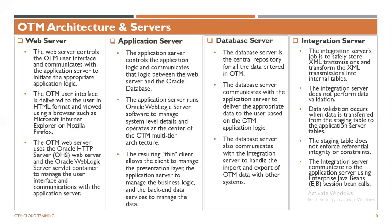The application server controls the application logic and communicates that logic between the web and the Oracle database. Whatever logic is submitted from the UI or web layer, the application server creates logic based on the submitted request and connects to the database. The application server runs Oracle WebLogic server software to manage system-level details and operates at the center of OTM's multi-tier architecture. The resulting thin client allows the client to manage the presentation layer, the application server to manage the business logic, and the backend data services to manage the data.